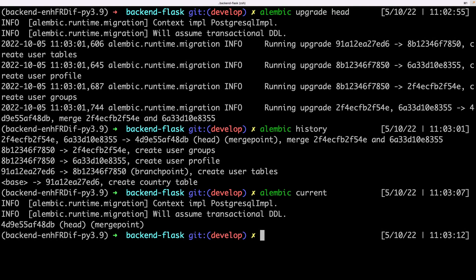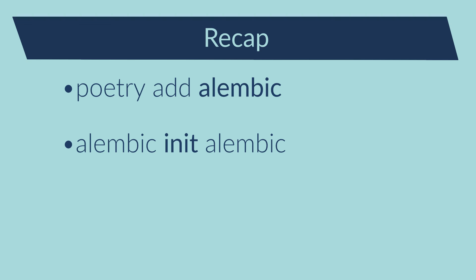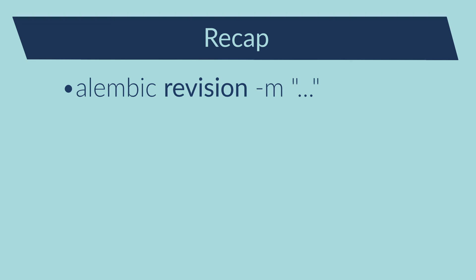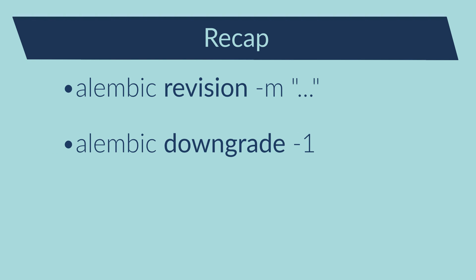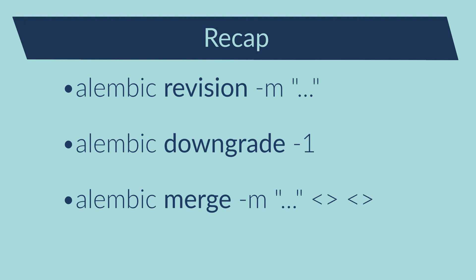Let's make a quick recap. I've installed Alembic in my project and initiated Alembic — this way I have the configuration file ready for the connection. I've edited my configuration file, alembic.ini, to indicate the URL of the database. I've created several revisions and also downgraded some revisions. When some revisions are made in parallel Git branches, I can merge them with the merge command. That's all for this video. I hope you learned something new today — leave a comment if you think I've missed something important. Don't forget to subscribe and see you soon. Bye!